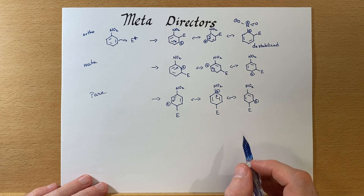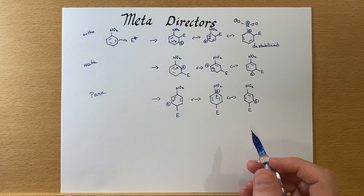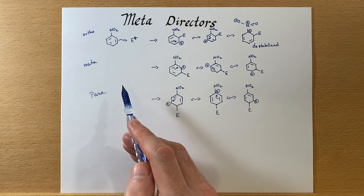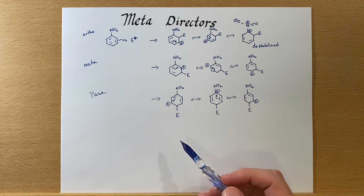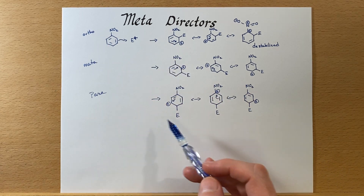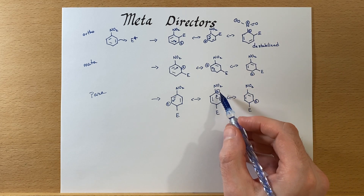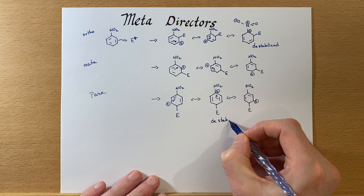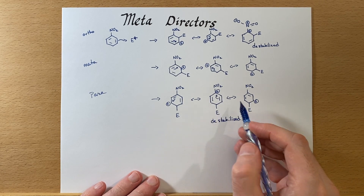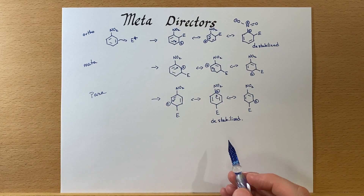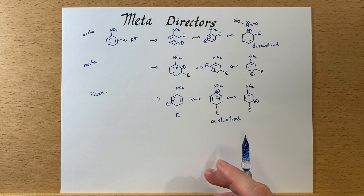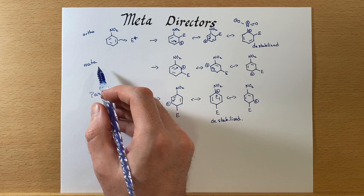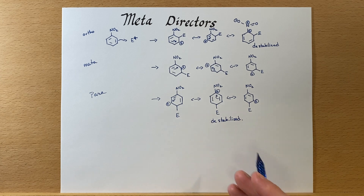So hopefully we can start to see why electron withdrawing groups tend to direct substitution to the meta position, whereas electron donating groups tend to go in the ortho or para direction because they can stabilize that charge, whereas electron withdrawing groups will destabilize it. In the meta case we don't see any of that drastic destabilization. That is why nitro groups and other electron withdrawing groups tend to direct substitution to the meta position.